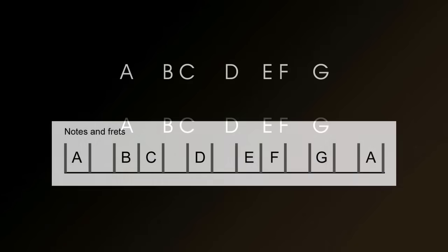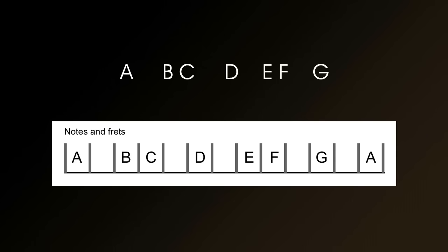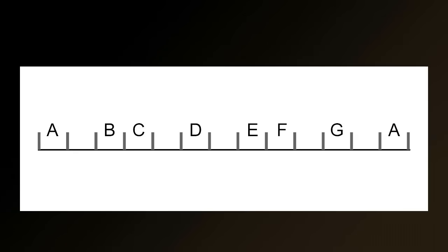The first slight complication that needs to be remembered is that the gaps between the notes aren't all uniform. The B and C and the E and F are closer than all the other notes. Or, to put it another way, what's actually going on is there's a tone gap between each of the notes except B and C where there's a semitone and E and F where there's another semitone.